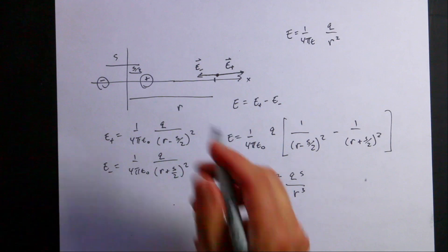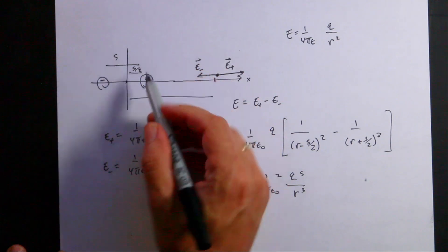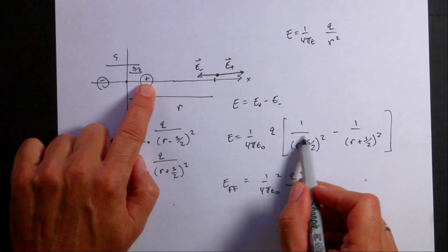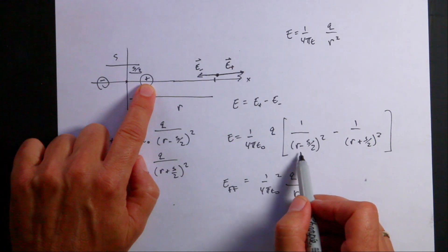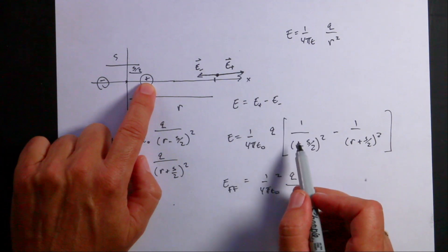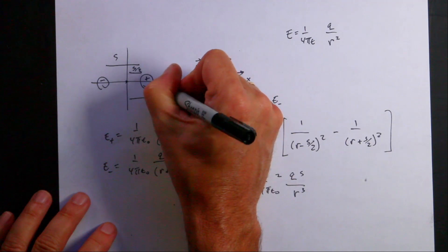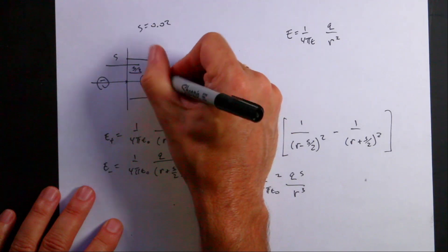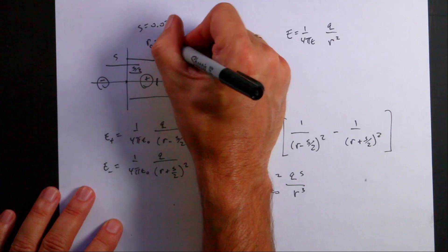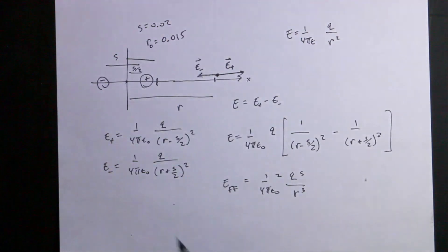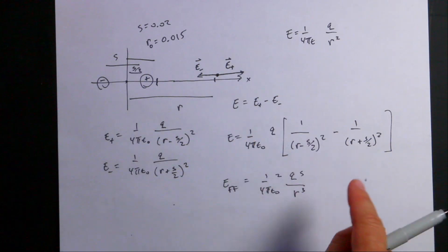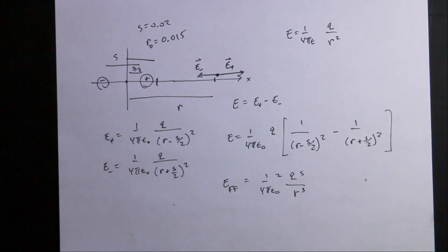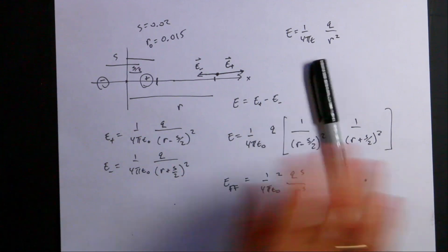I have to be careful not to start from R equals zero, because when R equals S/2 the field goes to infinity — we're right on top of a charge. So instead I'll start at R₀ equal to 0.015 meters. Then I'll step forward, calculate both fields, step again, and repeat. I'm going to do this in Python — you could do it on graph paper, but Python makes it easier. Let's jump over there.